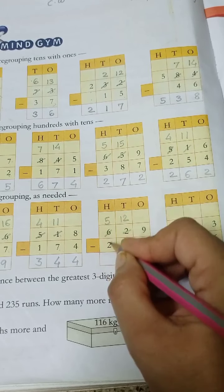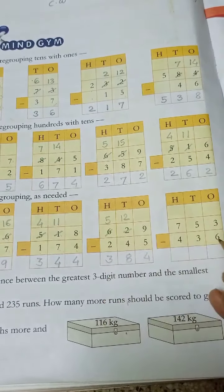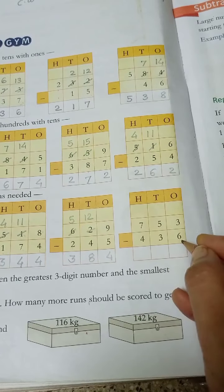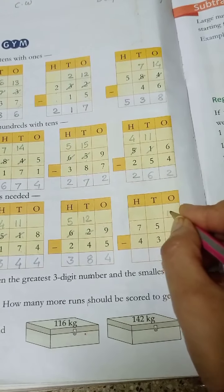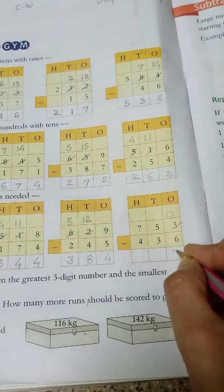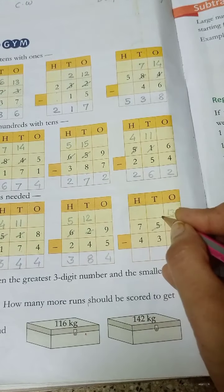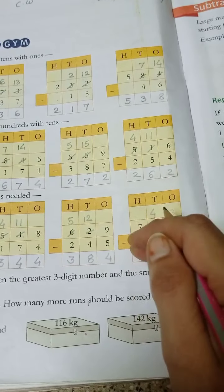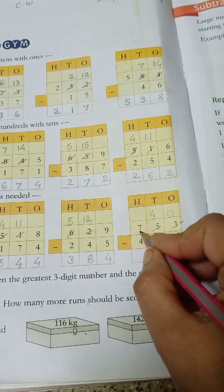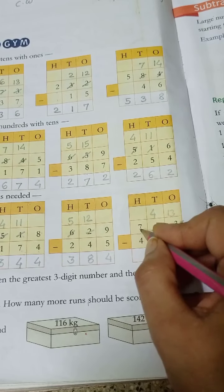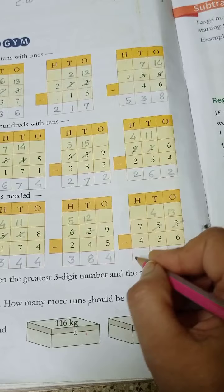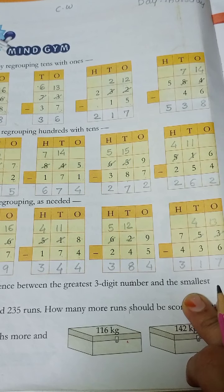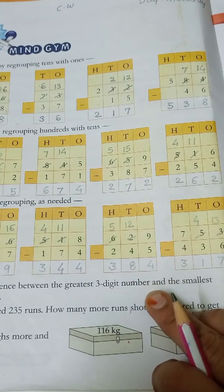Then next number, 753 minus 436. 3 minus 6? No. Plus 10, here 13. 13 minus 6, answer is 7. Then 5 minus 1 is 4. Then 4 minus 3 is 1. You have to say that if you have to regroup, you have to do this. Then you have to minus, cut to do this.